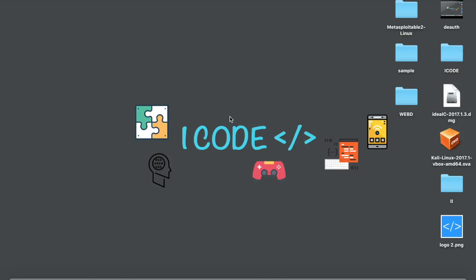Hey guys, what's up and welcome to iCode. In this video, I'm going to be introducing you to a framework called SwiftSoup. SwiftSoup is a framework used to parse HTML and get text content for a particular tag, something like an HTML tag, body tag, or paragraph tag. Let me just show you how to work with the SwiftSoup framework. Let's get started.